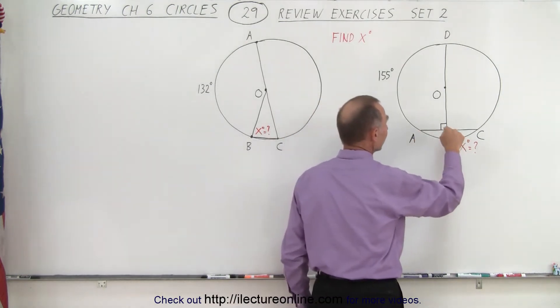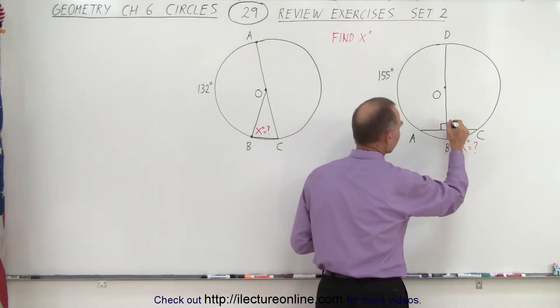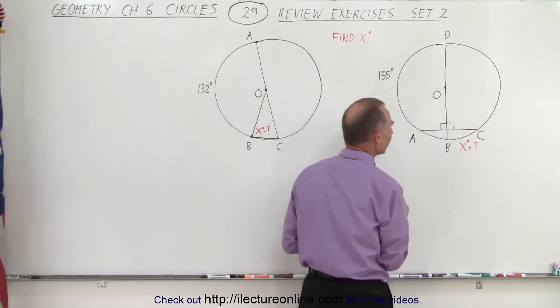And notice that the line from A to C is perpendicular to the diameter, which means that we have a 90 degree angle on the other side as well, because that must add up to 180 degrees.